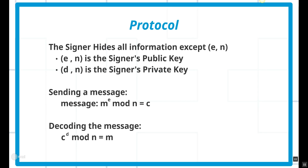Someone wanting to send the signer a message raises m to the power of e and takes it modulus n, which creates the encrypted message c. The signer receives that message and decodes it — without anyone else knowing what the message is — by raising c to the power of d and taking that modulus n, which generates the original message m.